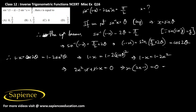Therefore x equals 0 or 2x minus 1 equals 0, giving x equals 1 by 2. So x equals 0 or x equals 1 by 2, but we need to check if these two solutions satisfy the given equation.